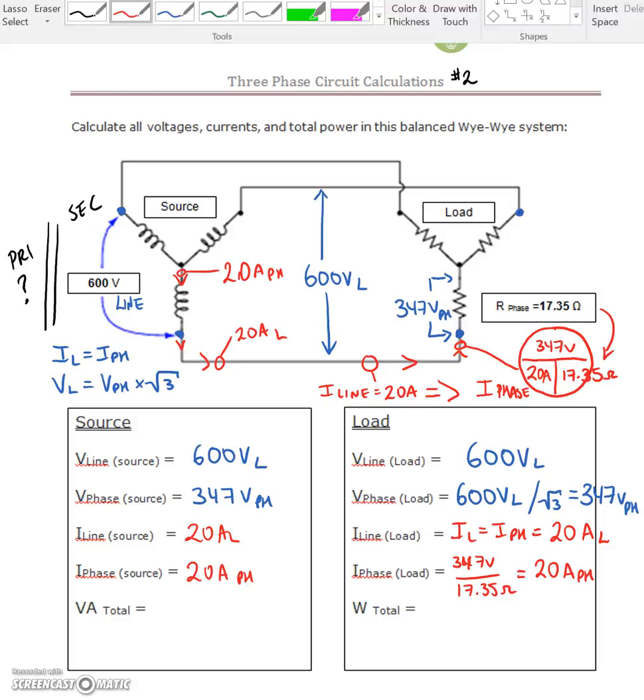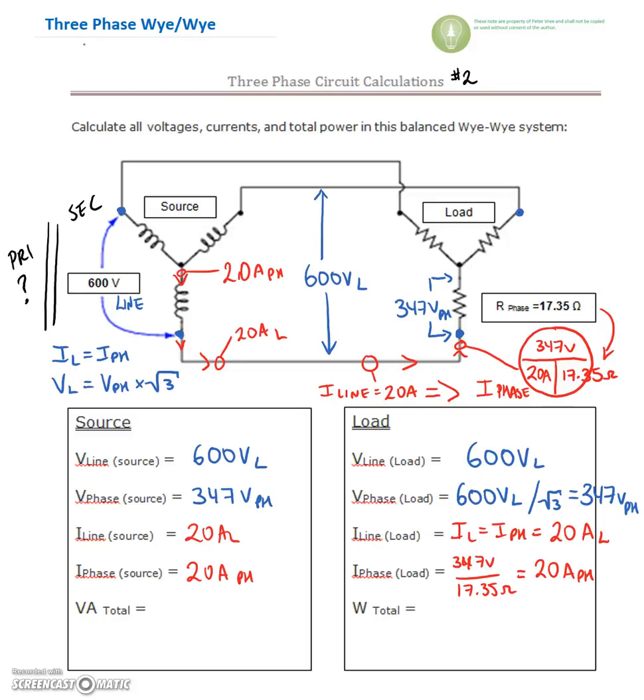Last thing we're going to do is we're going to find our power values. So remember that there are two equations that we can make use of. So we can use our line voltage values, so line voltage times line current. Line current is 20 amps on the line. And we're going to multiply our three phase values by root three.